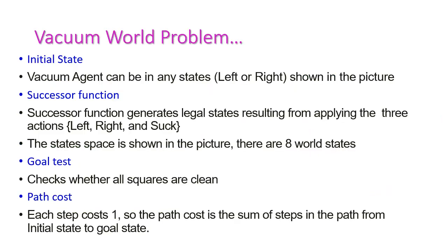Now let us try to derive the initial state, successor function, goal test, and path cost — these four are very important components for solving any problem. The first one is the initial state. The vacuum agent can be in any state, meaning the left side or right side of the block. As shown in the picture, this is the left side and this is the right side. Both are dirty. In the initial situation, the vacuum agent may be in the left side or it may be in the right side.